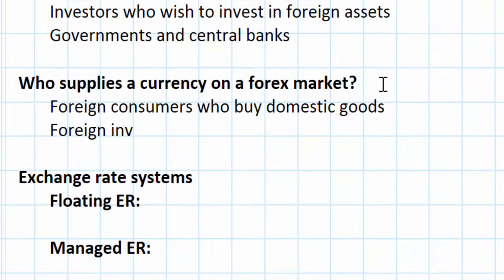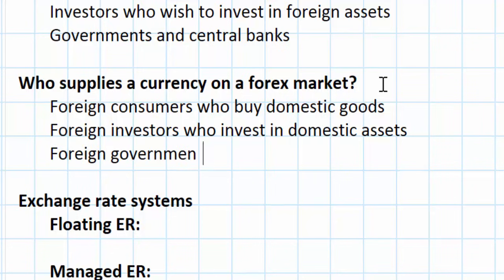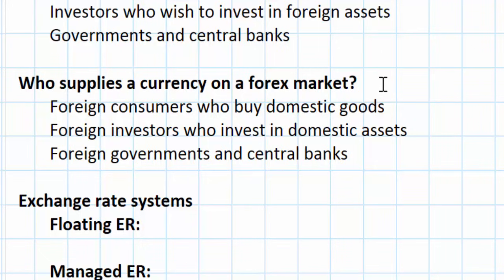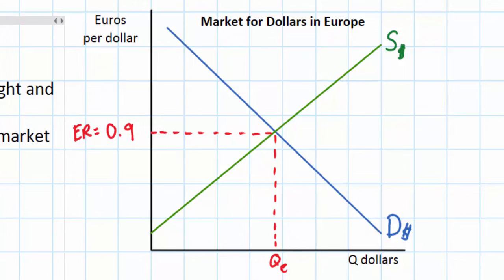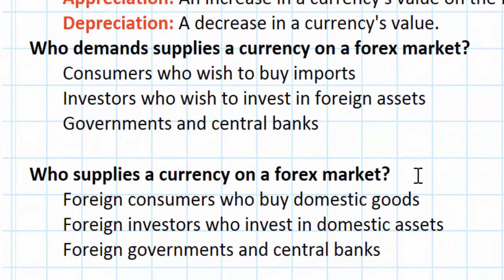Second, foreign investors who invest in domestic assets supply currency. Just as European investors buy American government bonds and put money in American banks, American investors buy European bonds and use European banks — to do so they must acquire euros and supply dollars. Third, foreign governments and central banks invest in domestic assets, supplying their own currencies into the domestic forex market. The demand and supply of a currency is made up almost entirely by consumers, investors, and governments and central banks, whose cross-border transactions result in a constant flow of foreign exchange into and out of forex markets.